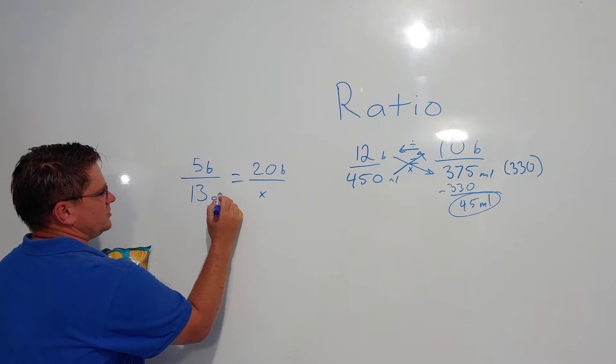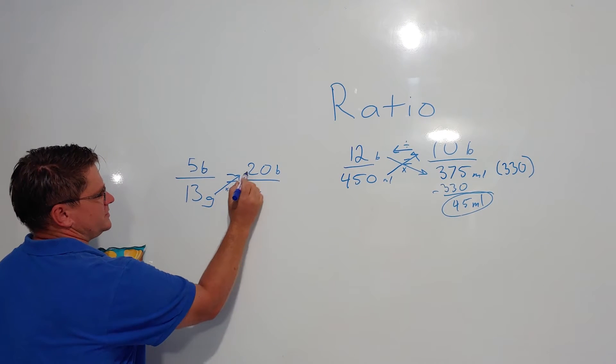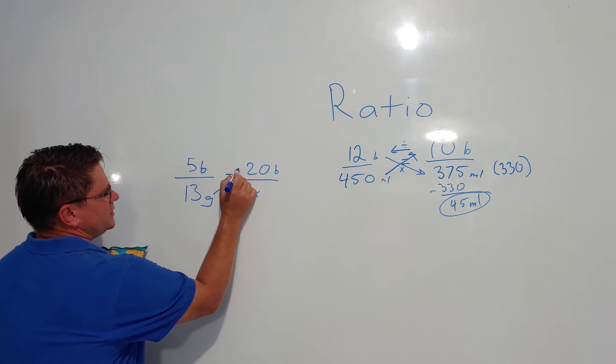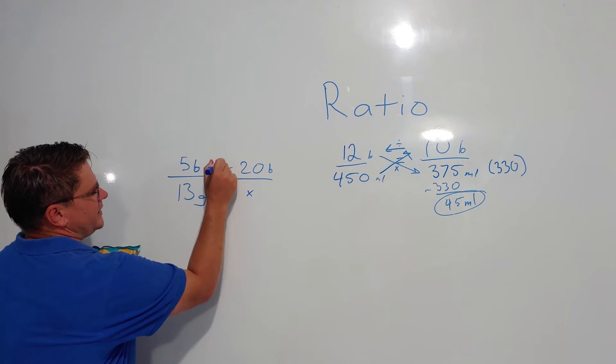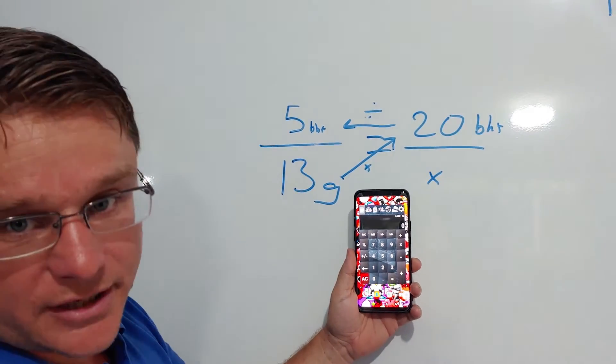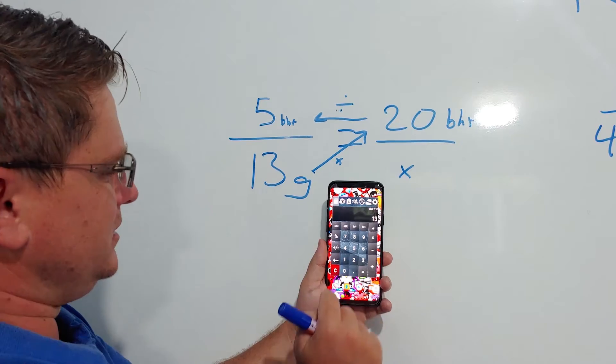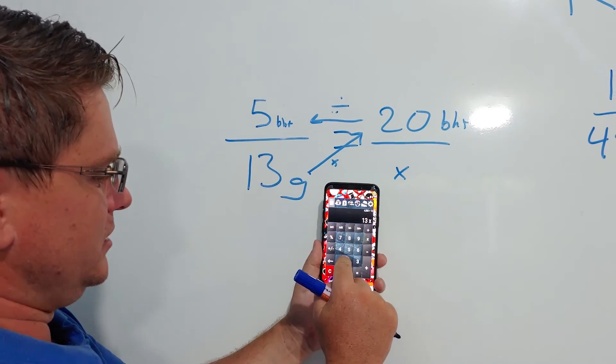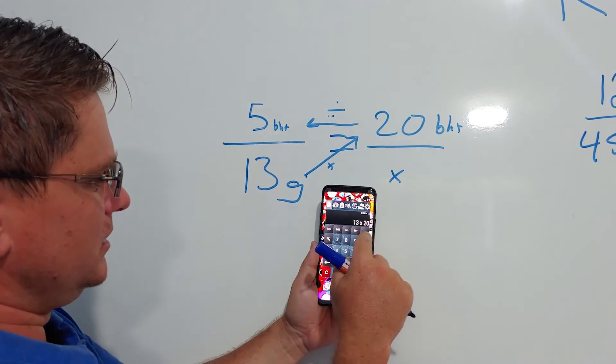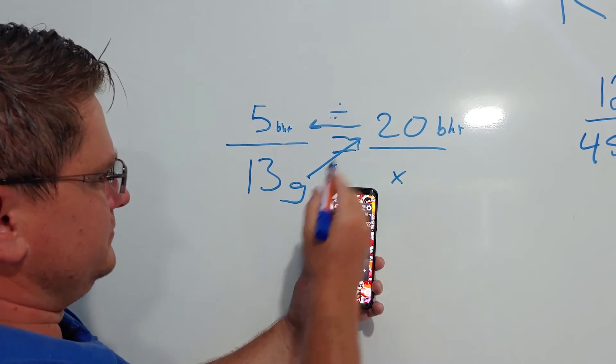You do 13 times 20 and then you take that and divide it by 5. So now take out your trusty calculator. Do 13 times 20 divided by 5, is 52.